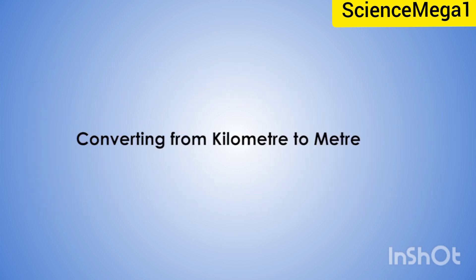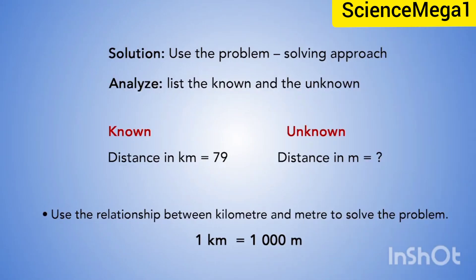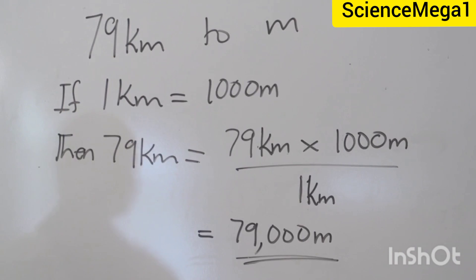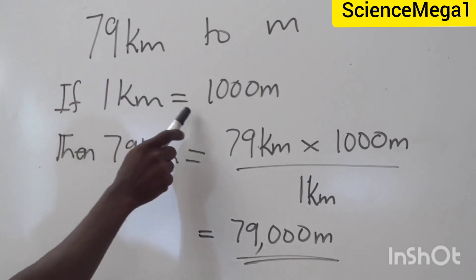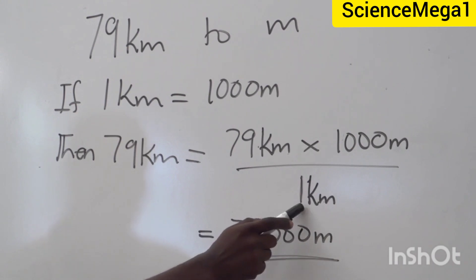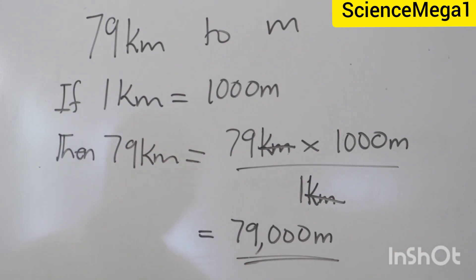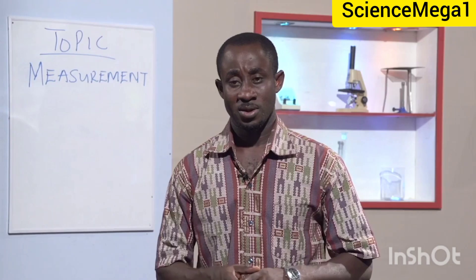Now let's look at converting from kilometer to meter. The distance between Boko and Bolgatanga is 79 kilometers. What is the distance in meters? Going by the problem-solving approach, let's list the known and the unknown. The known is the distance in kilometers, which is 79. The unknown is the distance in meters. Since we know that one kilometer is equal to 1,000 meters, then 79 kilometers multiplied by 1,000 meters divided by one kilometer gives a final answer of 79,000 meters.